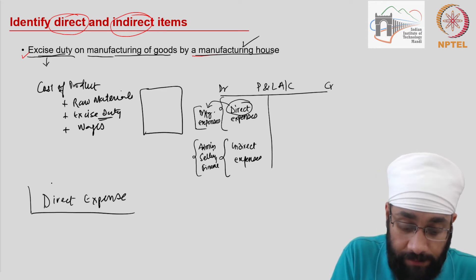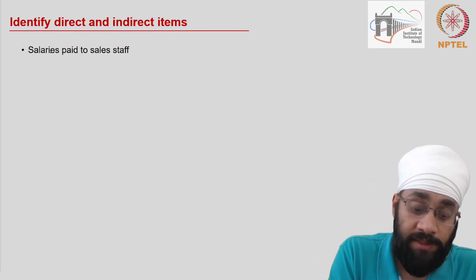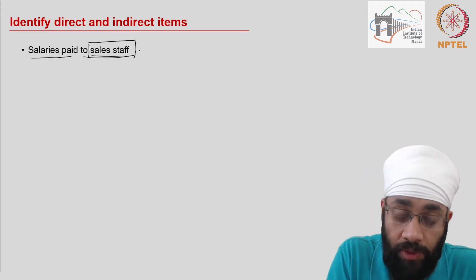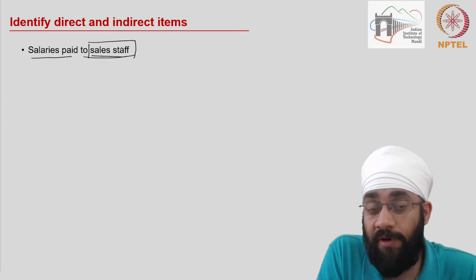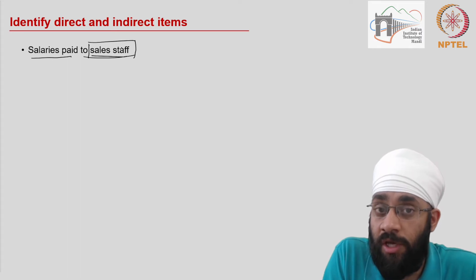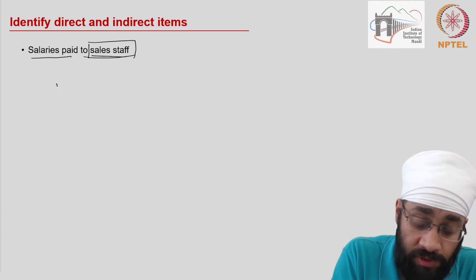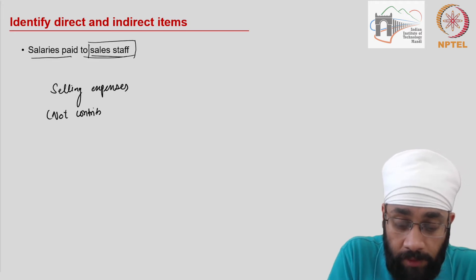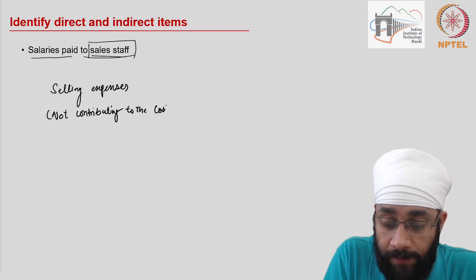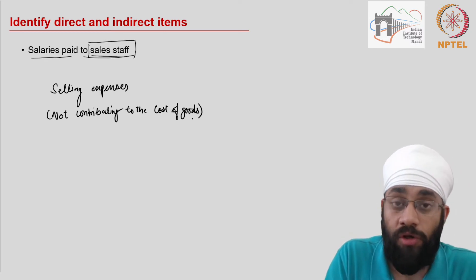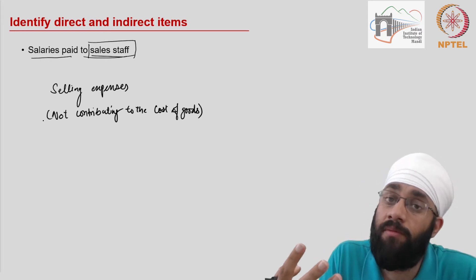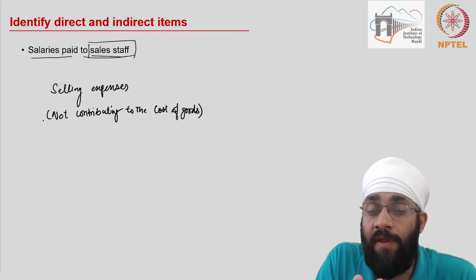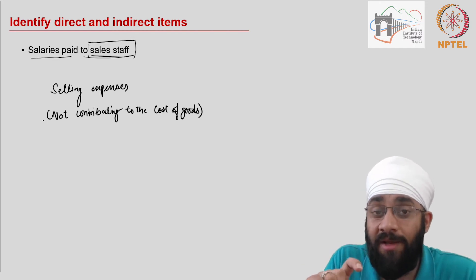The next expense is salaries paid to sales staff. Sales staff help in selling the goods, not manufacturing them. Whenever expenses are incurred on non-manufacturing functions, we call them indirect expenses. Salaries paid to sales staff fall under selling expenses and are not contributing to the cost of the goods. Selling expenses increase the overall cost of running the business, but we are segregating the two types of cost, so this is an indirect expense.